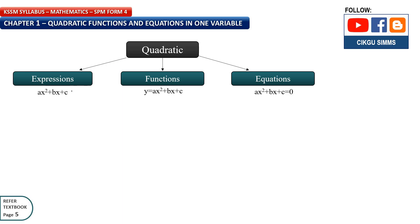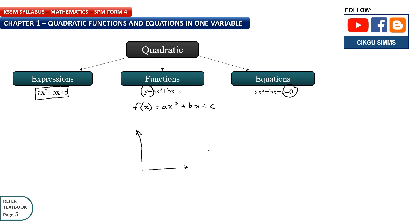Let's see the difference between quadratic expression, quadratic function, and quadratic equation. They all have ax squared plus bx plus c. For a function, you have y equals ax squared plus bx plus c, or sometimes written as f(x) — which means function, same as y. For an equation, you have it equal to 0. It's the same thing — if y is 0, the function becomes an equation. Functions are used to show the graph.